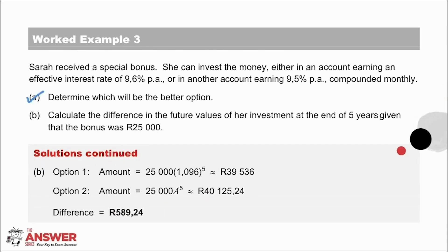Looking at part B done the smart way: Option 1 is the R25,000 bonus times (1 + 0.096), which is 1.096 for 5 years, giving an answer of R39,536. Option 2 is the R25,000 bonus times the compounding factor saved in memory, to the power of 5 for 5 years. If you didn't save the factor, re-enter it here. The value of her investment is R40,125.24. The difference in the investments after 5 years is R589.24.